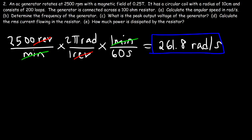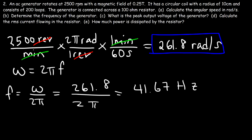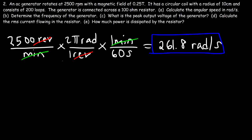For part b, determine the frequency of the generator. Since angular frequency ω equals 2πf, we solve for frequency: f = ω / 2π. So it's 261.8 radians per second divided by 2π, giving us 41.67 Hz. This shows how to convert from RPM to frequency for a generator.